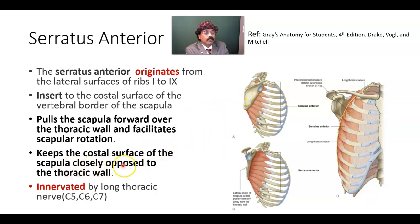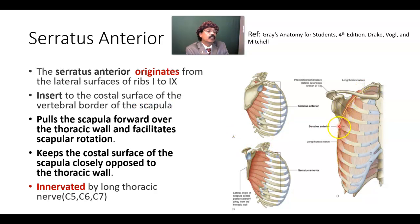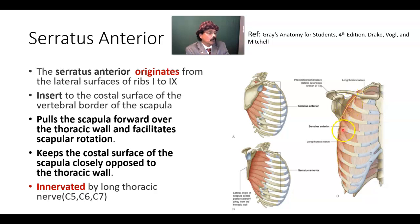If the serratus anterior is paralyzed, it cannot oppose the scapula to the thoracic wall, so this border will come out of the thoracic wall and will be very prominent. The serratus anterior is innervated by the long thoracic nerve, which arises from the roots of the brachial plexus at C5, C6, and C7. The long thoracic nerve passes over the muscle, covered by skin and superficial fascia, making this part of the chest wall very vulnerable to injury to the long thoracic nerve. It passes along the lateral thoracic wall over the serratus anterior muscle and is vulnerable to injury, which will lead to winging of the scapula.